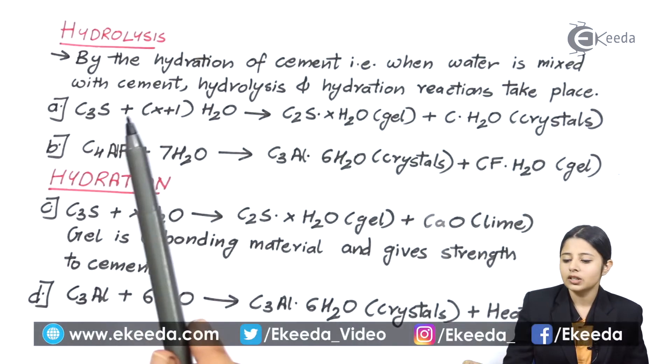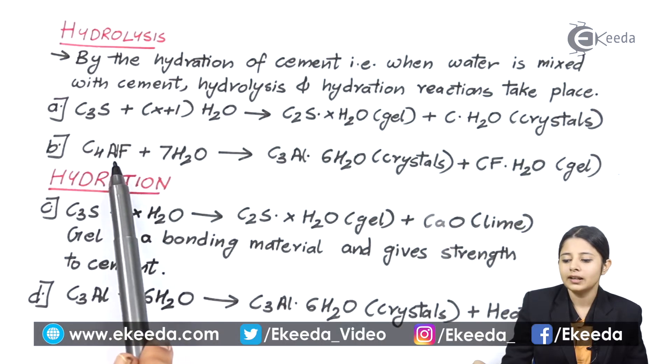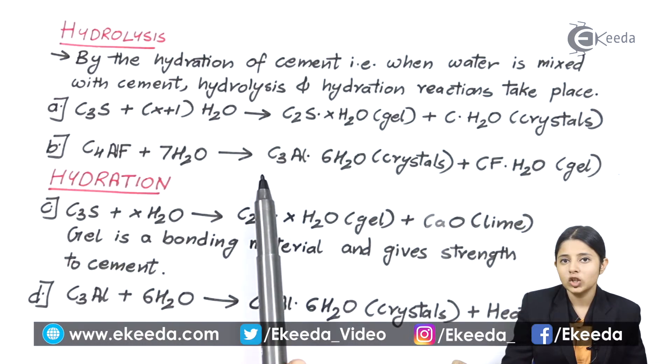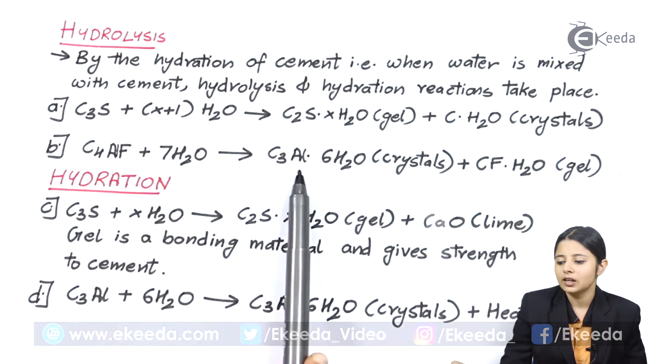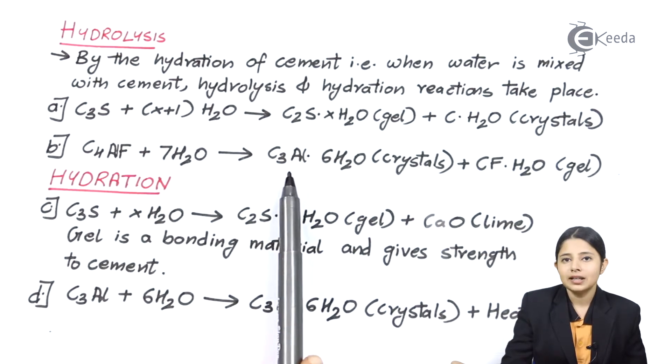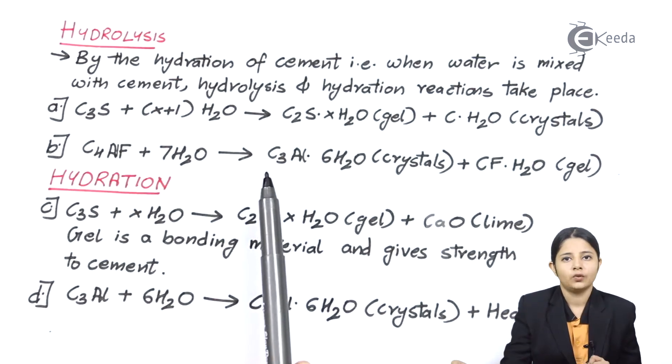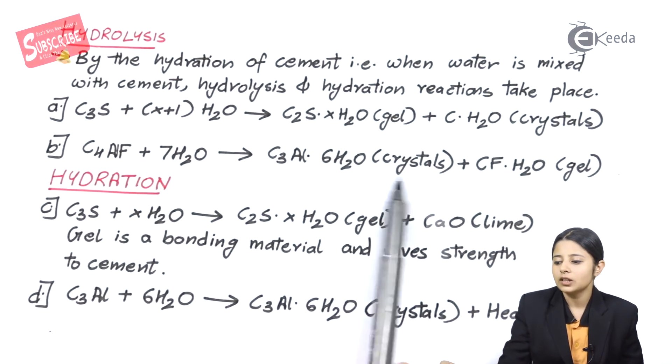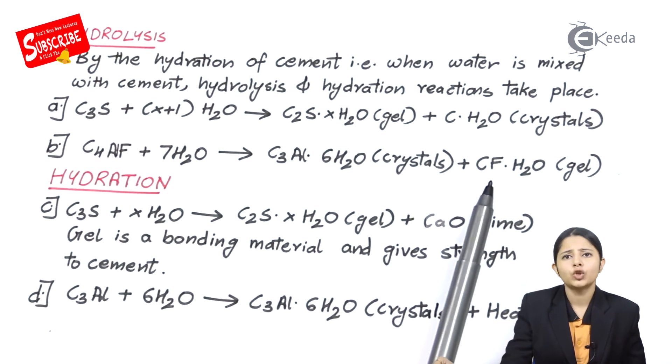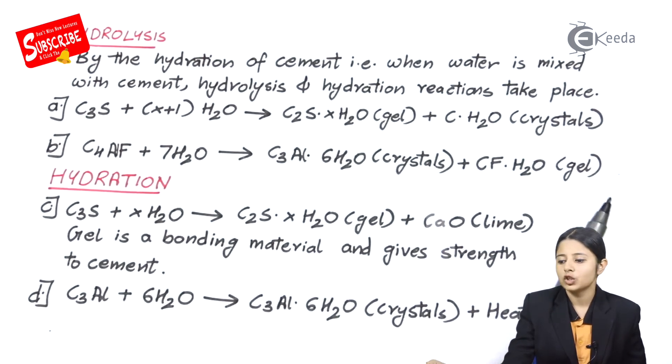Another reaction is C4ALF plus 7H2O which gives C3AL·6H2O. This AL can be written as AL (aluminum) or A (aluminate). This forms in crystal form plus CF·H2O forms in gel form.